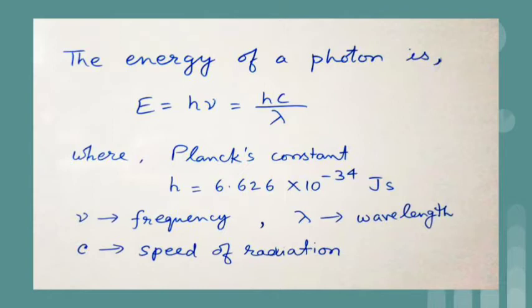The energy of a photon is E is equal to h nu or equal to hc by lambda where h is the Planck's constant and it has the value 6.626 into 10 to the power minus 34 Joules second. Nu and lambda are the frequency and wavelength of photon and c is the speed of radiation.